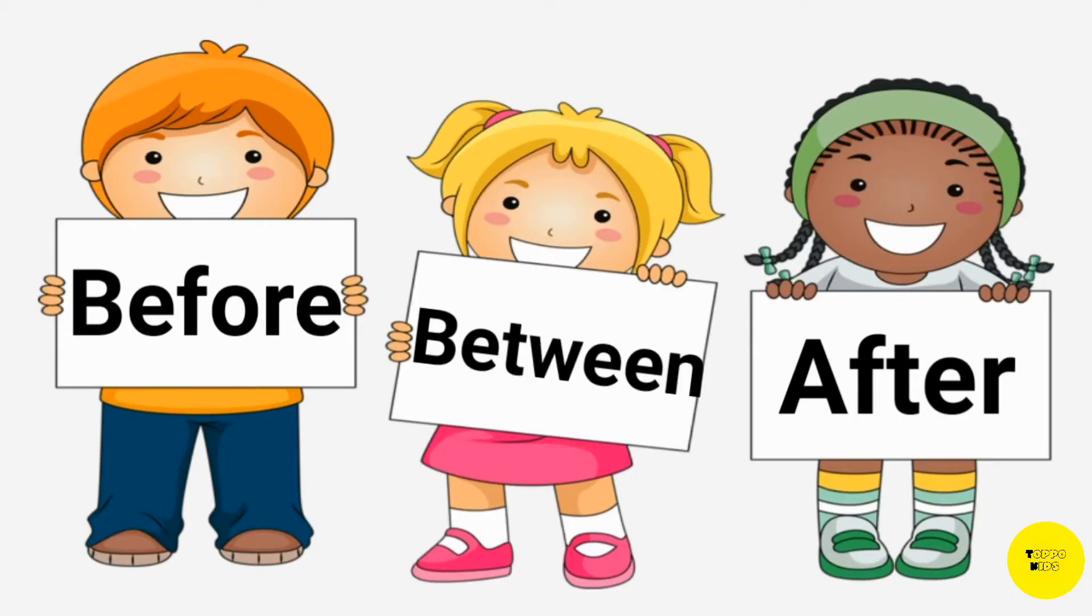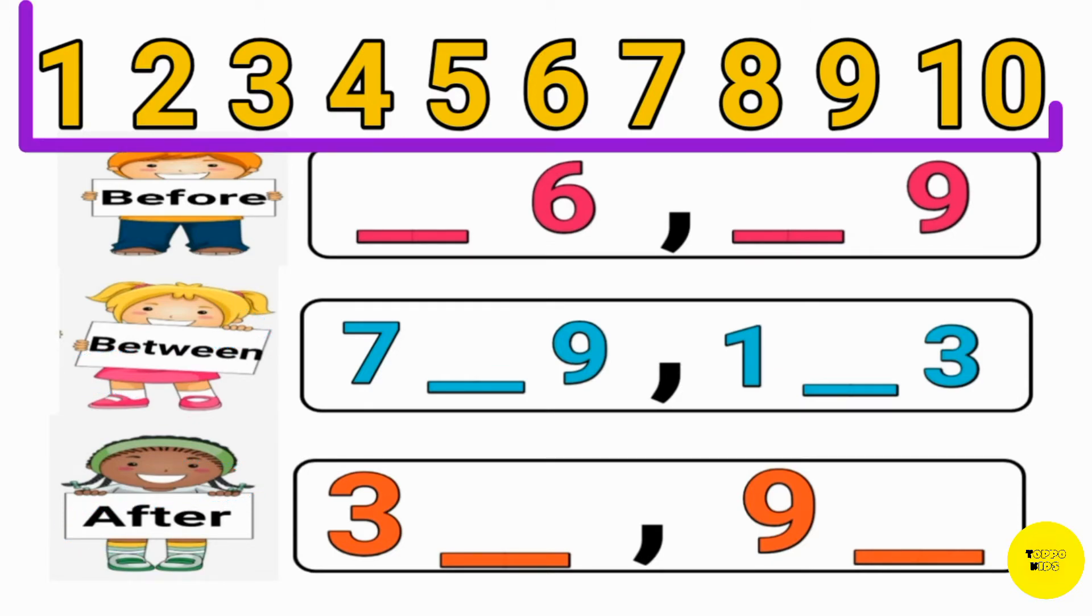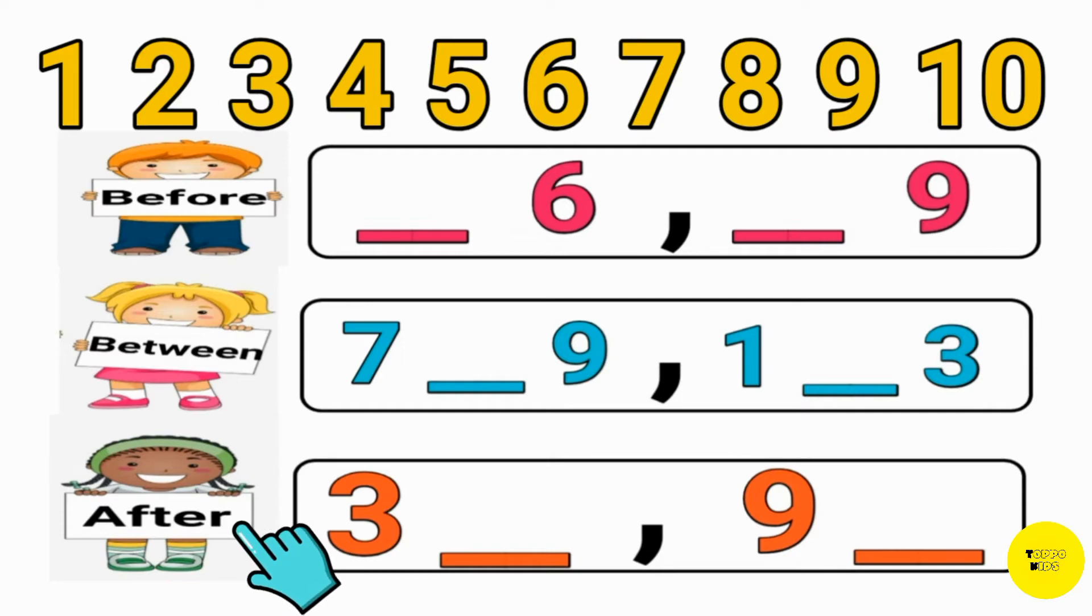When we need to tell the position of any object, thing, or number, we use Before, Between and After. Before means comes first or earlier. Between means comes in the middle. And After means comes later. So let's now do Before, Between and After with numbers. Here you have numbers 1 to 10. Based on this, we will find Before, Between and After numbers.